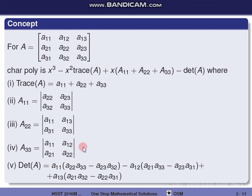The determinant of A, expanding along the first row, is: A11·(A22·A33 − A23·A32) − A12·(A21·A33 − A23·A31) + A13·(A21·A32 − A31·A22).